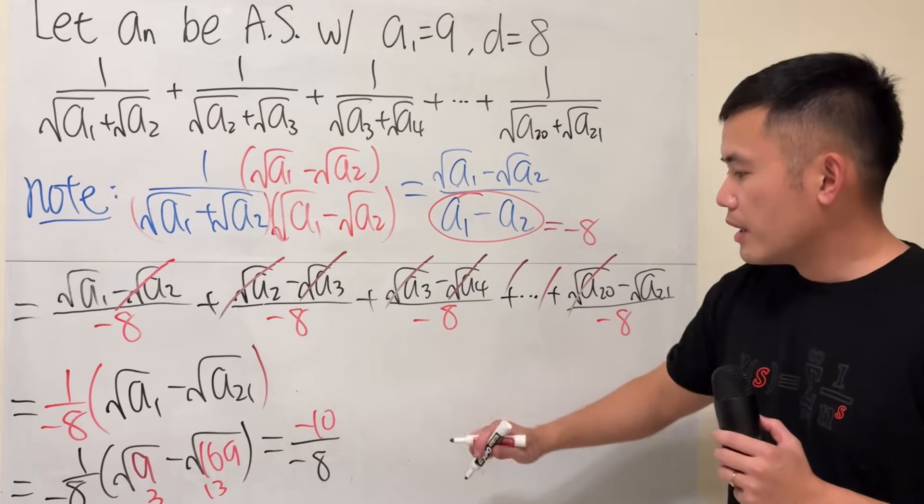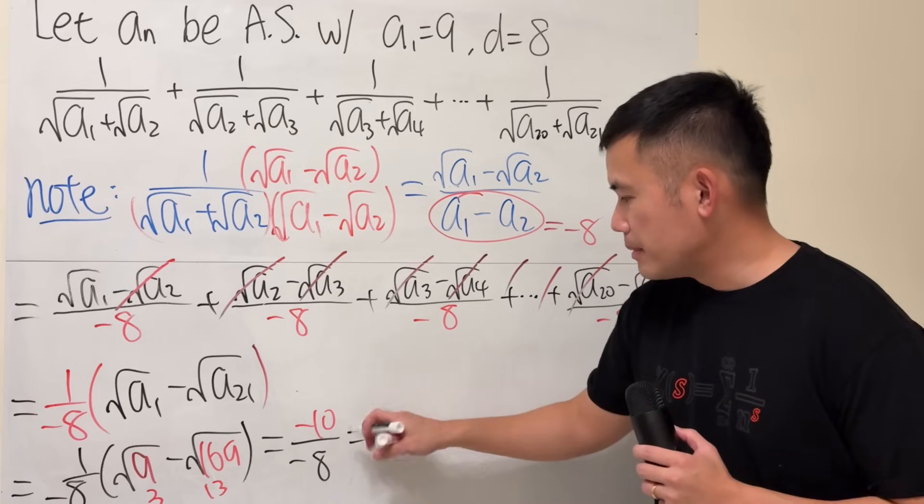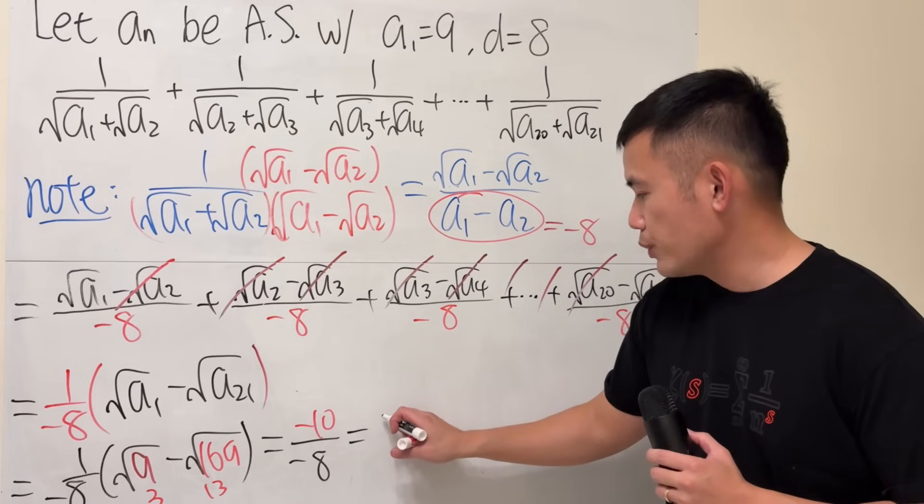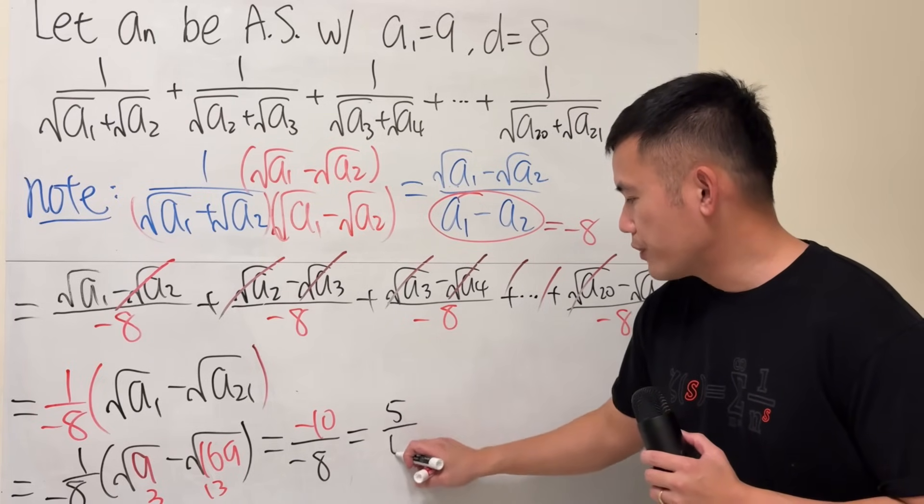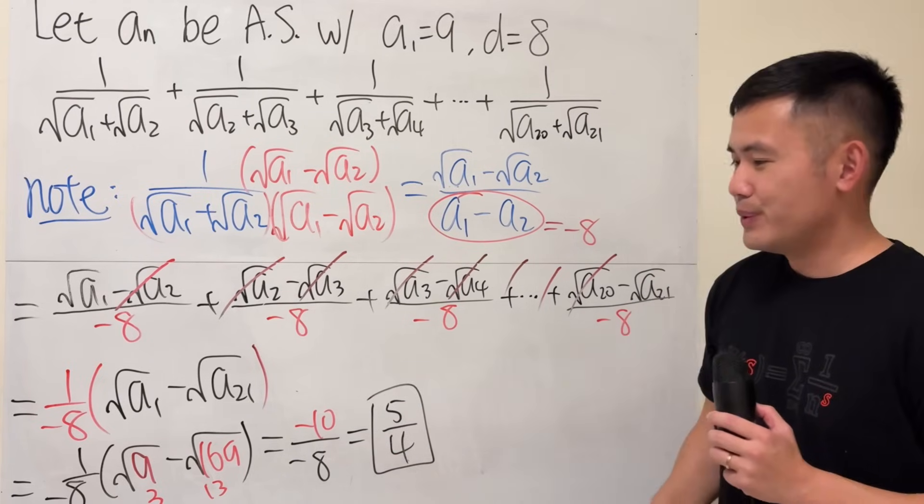And then, finally, reduce the fraction. Divide the top and bottom by 2. So, we have positive 5 over 4. And we are done.